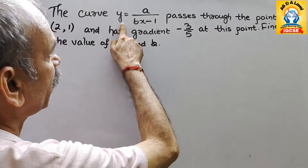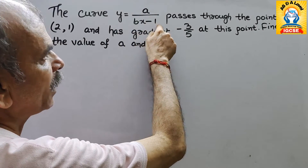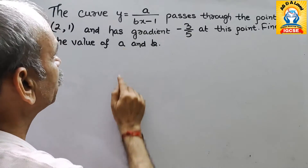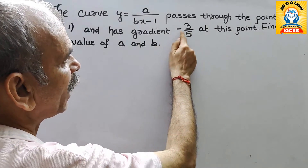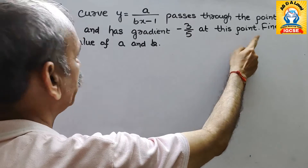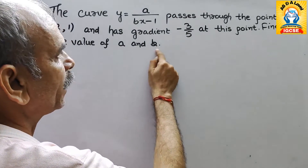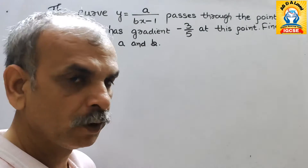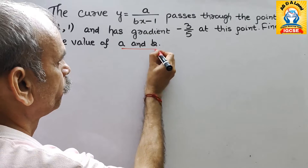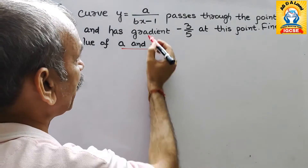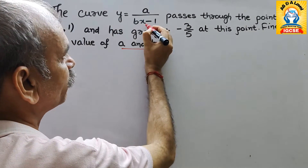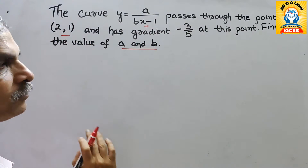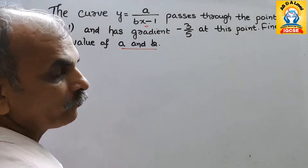The curve y = a/(bx - 1) passes through the point (2, 1) and has gradient -3/5 at this point. Find the value of a and b.